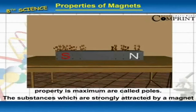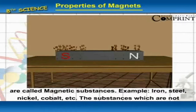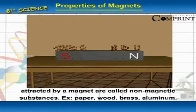The points inside the magnet where this attractive property is maximum are called poles. See figure 11.2a. The substances which are strongly attracted by a magnet are called magnetic substances. Examples: iron, steel, nickel, cobalt, etc. The substances which are not attracted by a magnet are called non-magnetic substances.